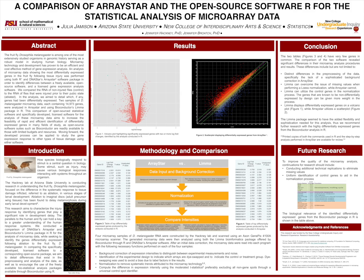In the analysis, we aim to detail which, if any, genes had been differentially expressed. Two samples of Drosophila melanogaster microarray data, each containing 14,973 genes, were analyzed in ArraySTAR and using Bioconductor's Limma package in R. This comparison of open-source statistical software and specifically developed licensed software aims to increase the feasibility of rapid and efficient identification of differentially expressed genes in many fields of study, as open-source software suites such as Bioconductor are readily available to those with limited budgets and resources.